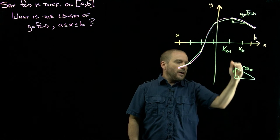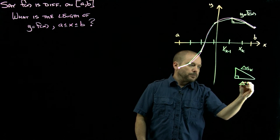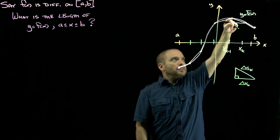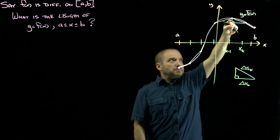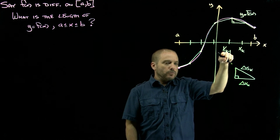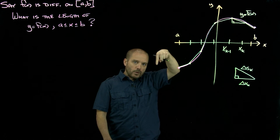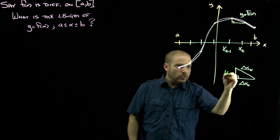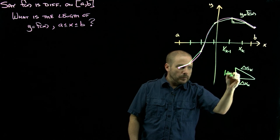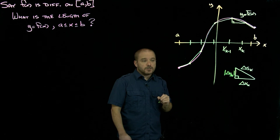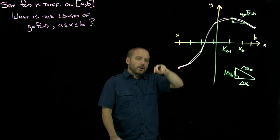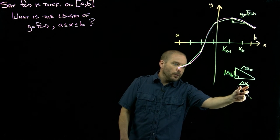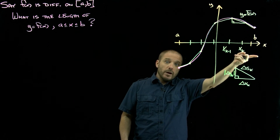This is just our change in x, delta x sub k. This is our change in y, but it's actually negative—as we move from x sub k minus 1 to x sub k, we went down. So to ensure that's never going to happen, we write that as the absolute value of delta y sub k. Depending on what the curve is doing, this could be positive or negative. This will always be positive, assuming we're integrating left to right.